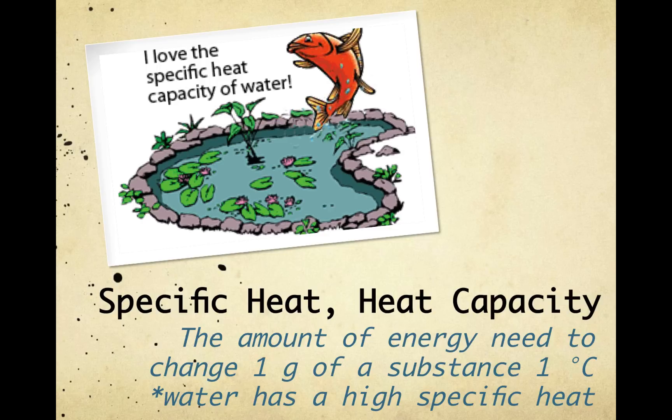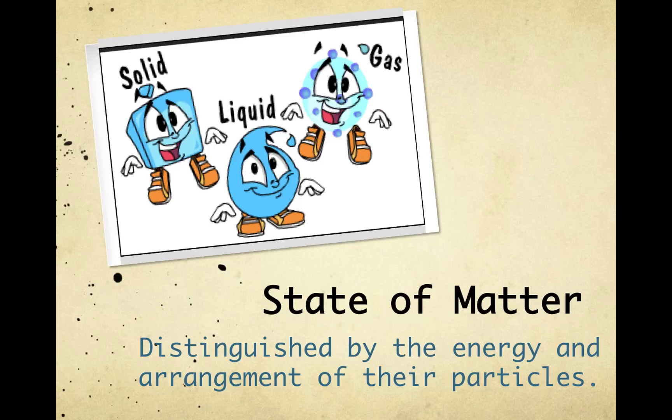And lastly, specific heat, or heat capacity — that's the amount of energy needed to change one gram of a substance one degree Celsius. Water has a high specific heat. Another example of a physical property is the state of matter. The state of matter, or phase of matter, is distinguished by the energy and the arrangement of their particles.